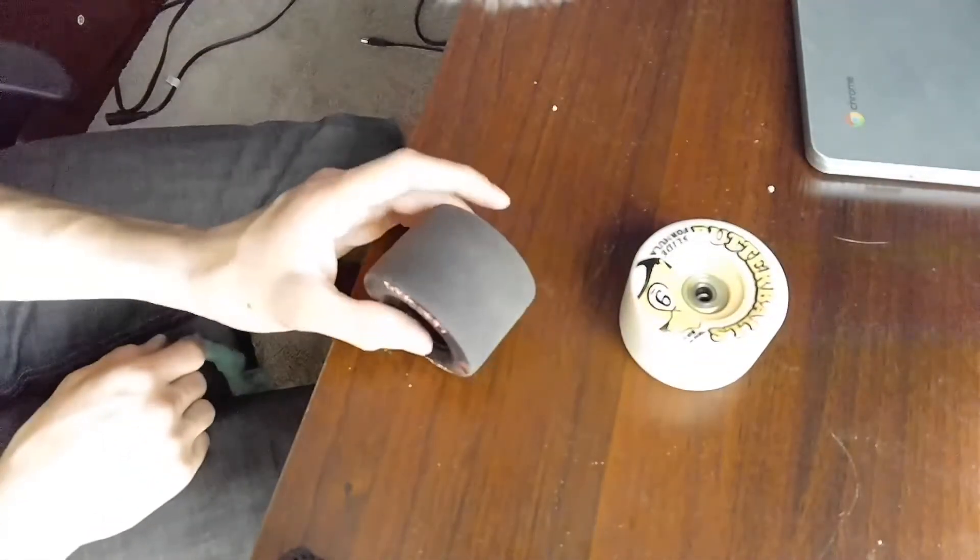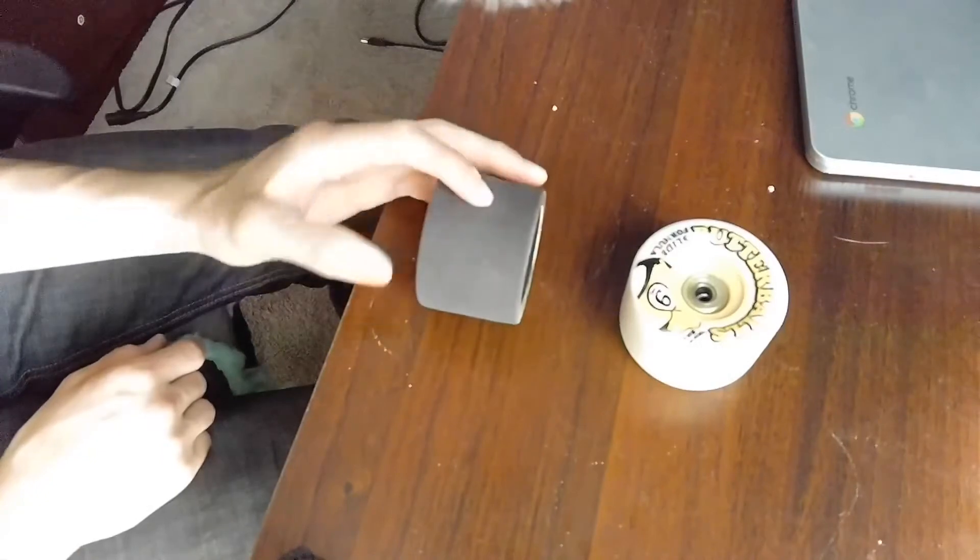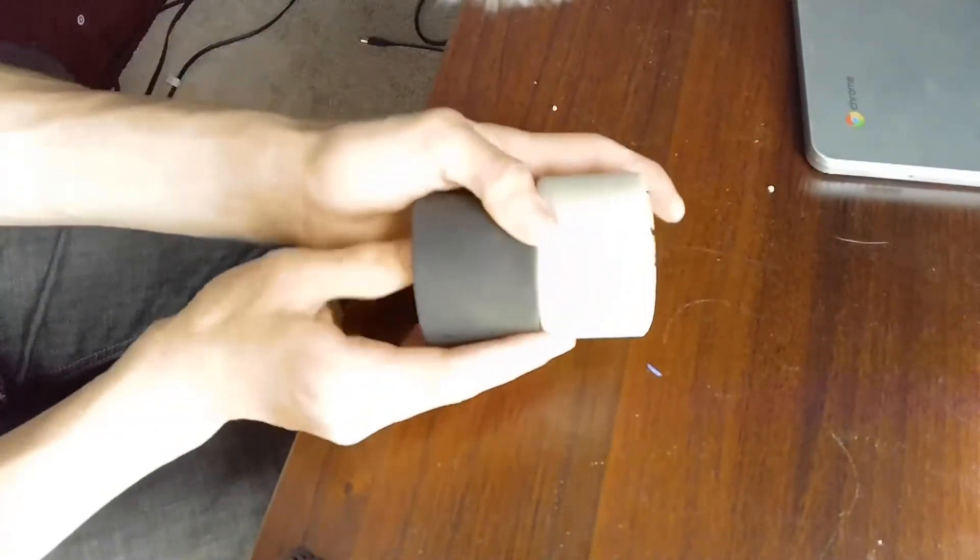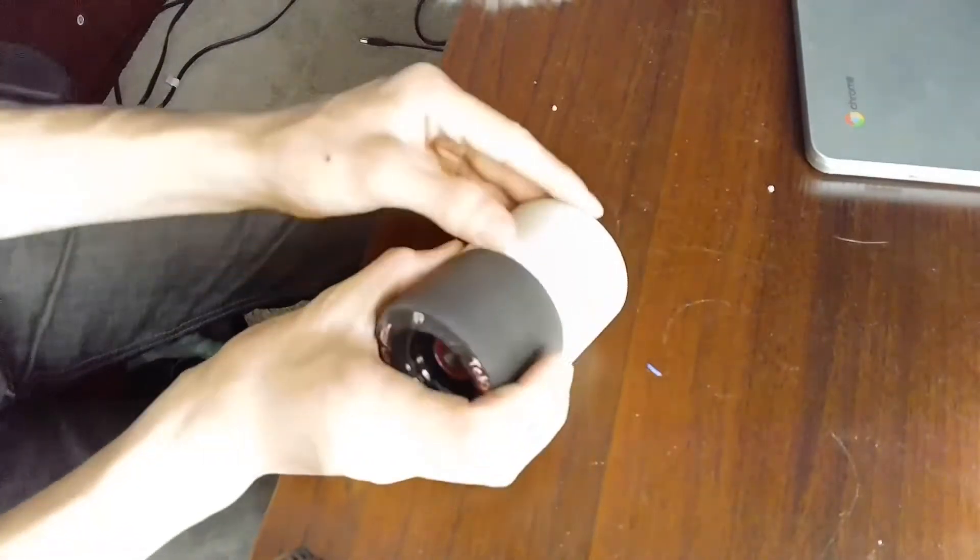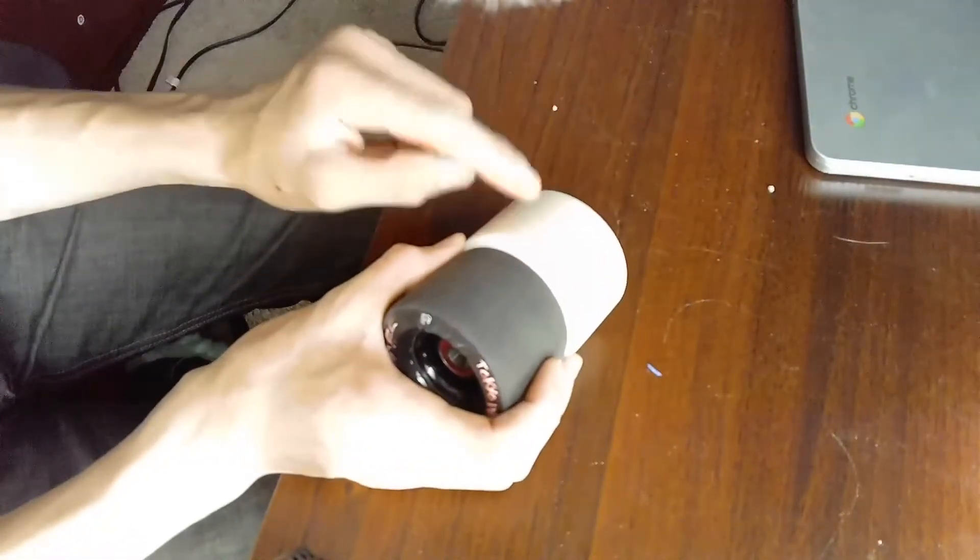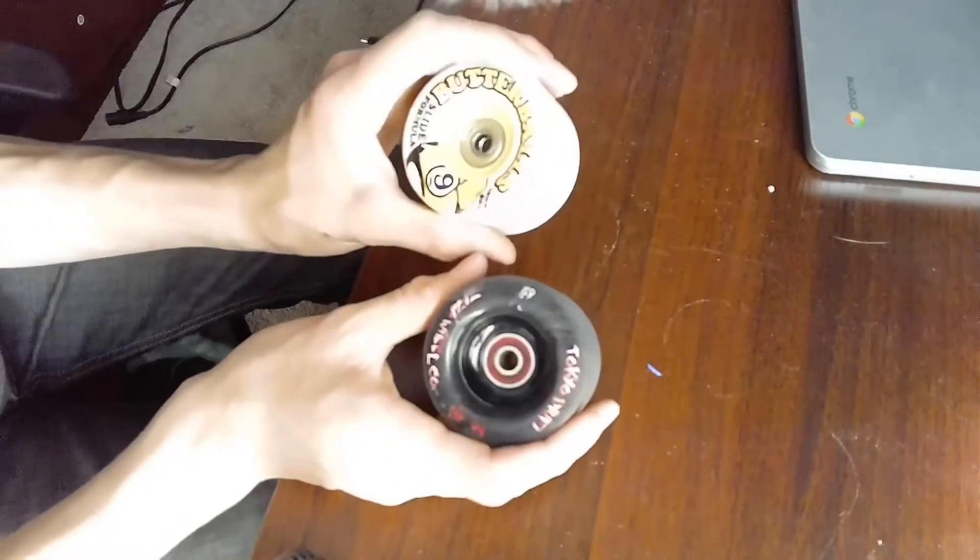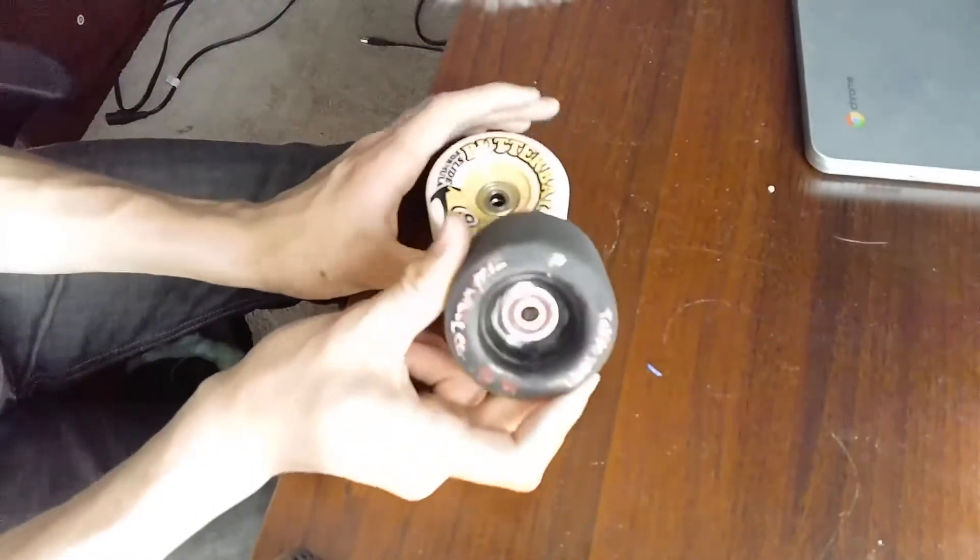First look, they're both rounded off wheels. This one's a little bit bigger, just a little bit. This one's 80A while this one's 83A.